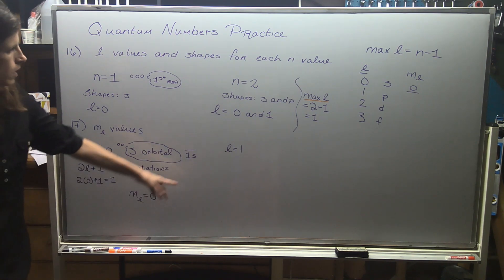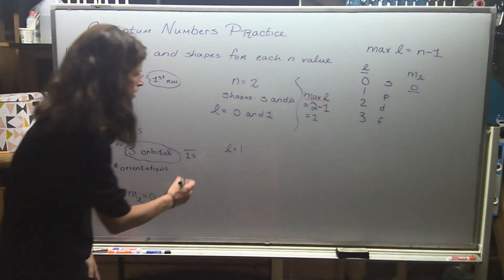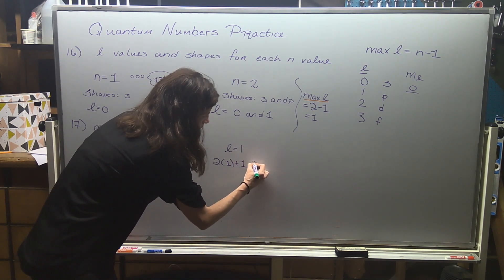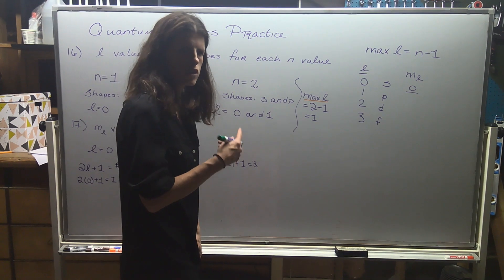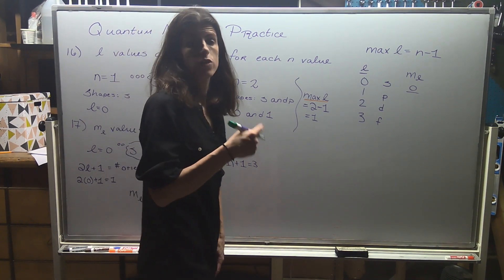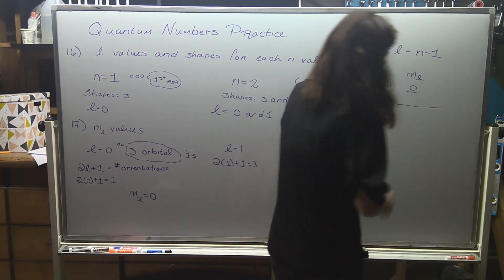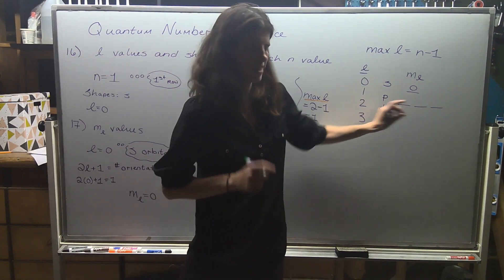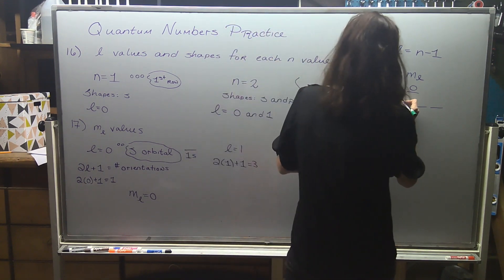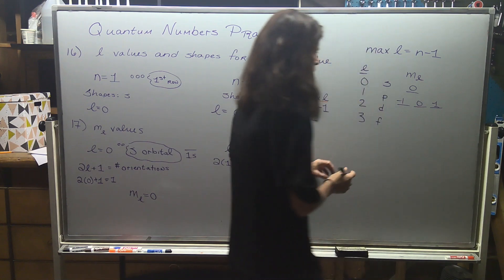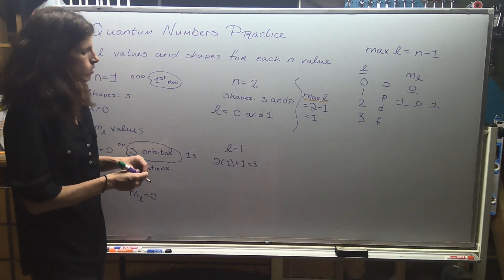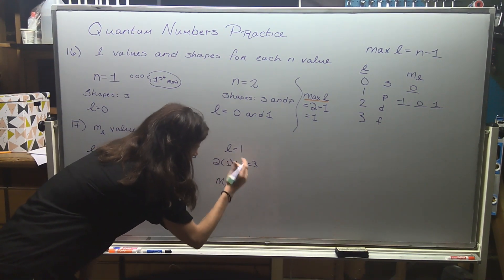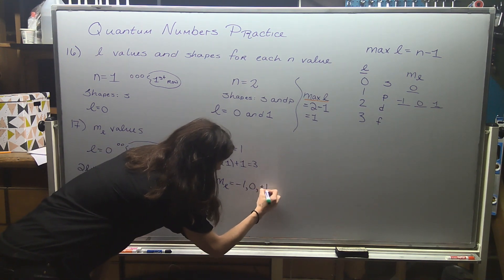Let's look at l equals one, which is a more interesting example. Using the formula: 2 times 1 plus 1 gives me 3. Or you might remember from electron configurations that p orbitals always held six electrons — you had three lines for your p orbitals. The ml values are centered around zero, so for p I do negative one, zero, and positive one. There are three different ways the p orbital can orient itself, so my set of ml values for l equals one is negative one, zero, and positive one.